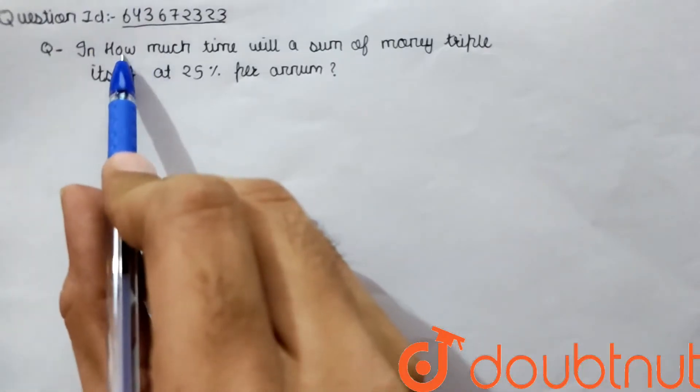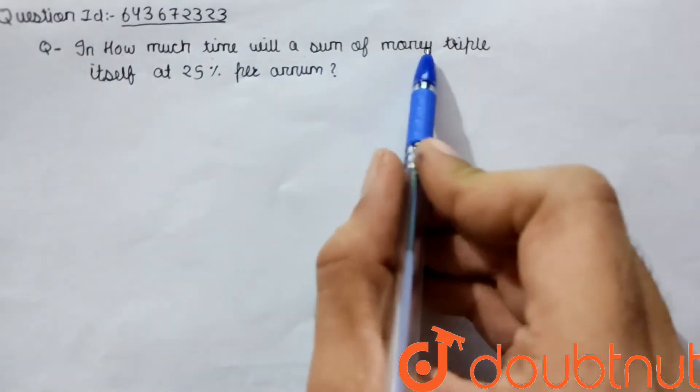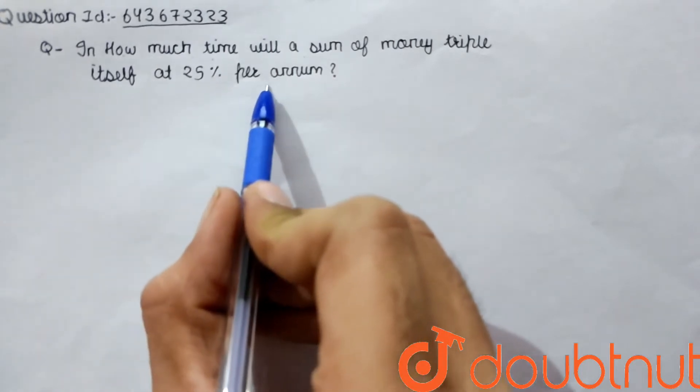The given question is: In how much time will a sum of money triple itself at 25% per annum?